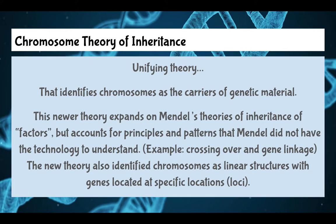The chromosome theory expands on Mendel's theories, which talked about factors. It accounts for patterns that Mendel didn't have the technology to understand, like crossing over and gene linkage. It also identifies chromosomes as linear structures with genes located at specific locations on the chromosome.